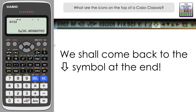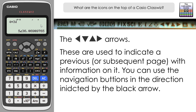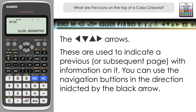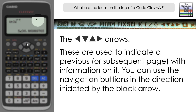I'll save the mystery white arrow for the very end, as it's not actually used on the FX-991EX version of the ClassWiz. But let's look at the darker arrows — there's a group of four directional arrows — which indicate that there is previous information on a previous screen or page that you can navigate back to. You can see they are currently active.